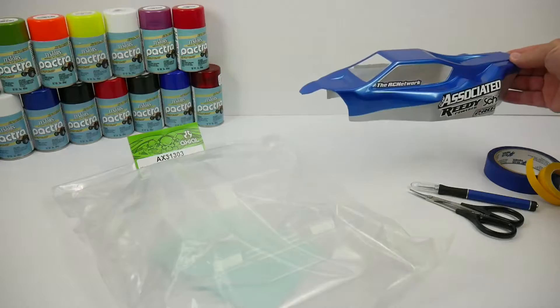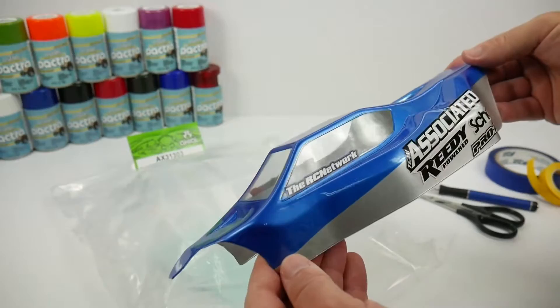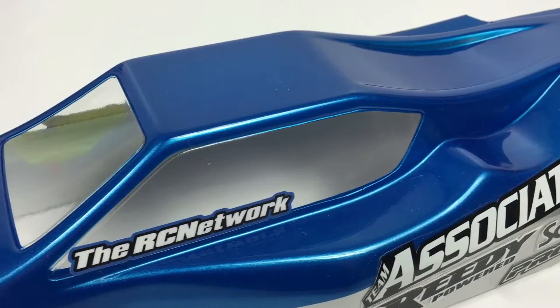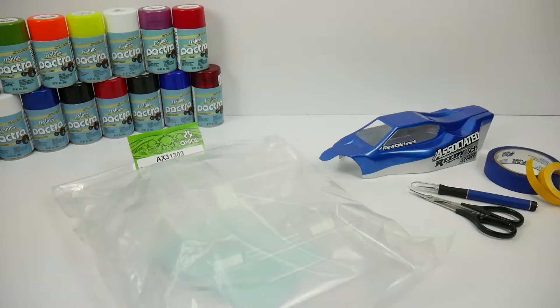Now if you're not familiar with Lexan or polycarbonate bodies that we use in the RC industry, we use these clear, somewhat flexible bodies to give our remote control vehicles somewhat of a scale look. Now this is a buggy body for the team associated B6D and I painted this up with some Pactra paints, but with that, a lot of the prep that needs to be done prior to painting is key. So in this video, I'll be showing you different tips and tricks on how to prepare a body for the best paint job of your RC vehicle.